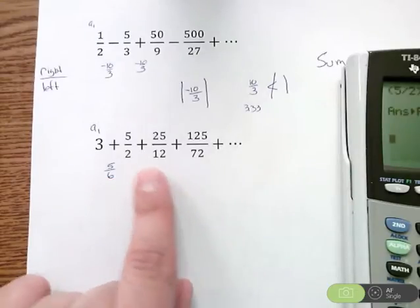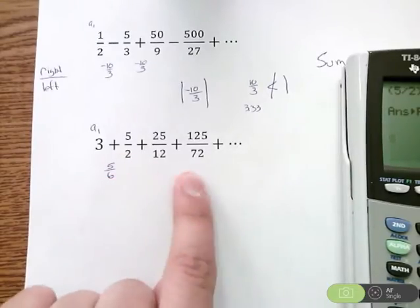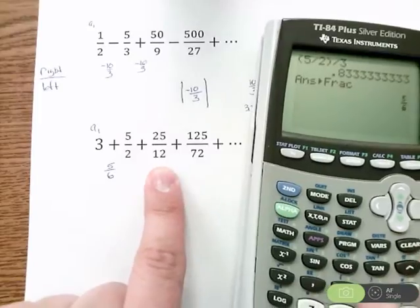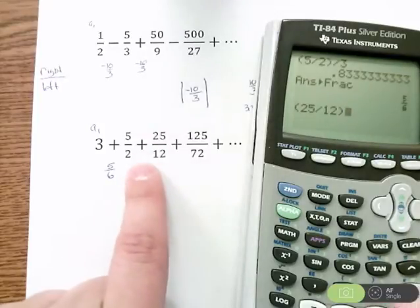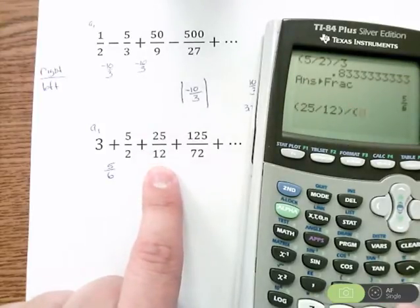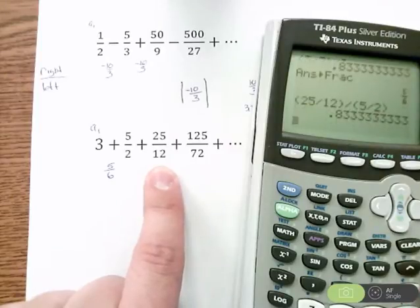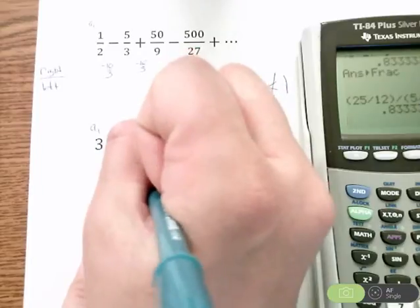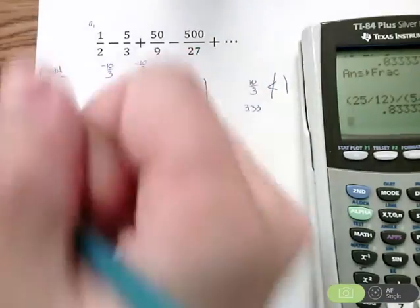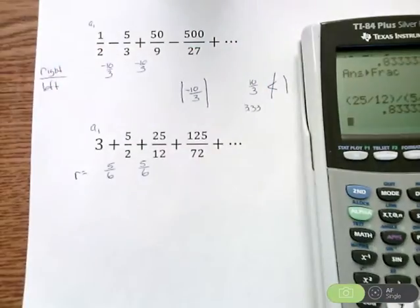Just to make sure I got this right and make sure it's geometric, I'm going to check that R stays the same. Parentheses, 25 divided by 12, close parentheses - that's 25/12 divided by 5/2. I got 0.833333 again, so 5/6 again. So there's my R and my A1.